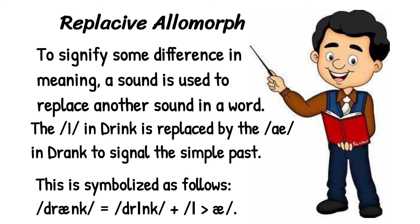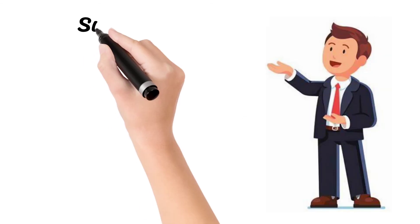In replacive allomorphs, we use a sound to replace another sound in a word in order to signify some difference in meaning. As in the words 'drink' and 'drank': 'drink' is the first form of the verb and 'drank' is its simple past form, so the sound /ɪ/ is replaced by /æ/. Wherever one sound is used to replace another sound to show a difference in meaning, we say that a replacive allomorph has occurred.